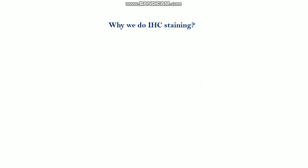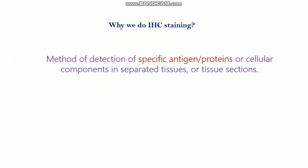First we need to know why we do IC staining, or what is the purpose of IC staining. This is a very useful and convenient technique for detection of specific antigens, proteins, or cellular components in separated tissues or tissue sections. In research, it is very useful to detect any kind of specific protein marker.